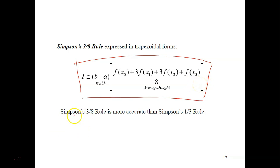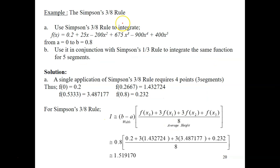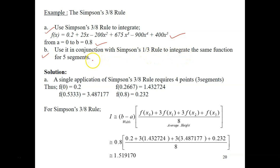This rule is more accurate than Simpson's one-third rule. Let's look at the example. Use Simpson's 3/8 rule to integrate the same function using the same limits. There are two parts: part A and part B. Part B is to use this method in conjunction with Simpson's one-third rule to integrate the same function for 5 segments. A single application of Simpson's 3/8 rule requires 4 points and 3 segments.